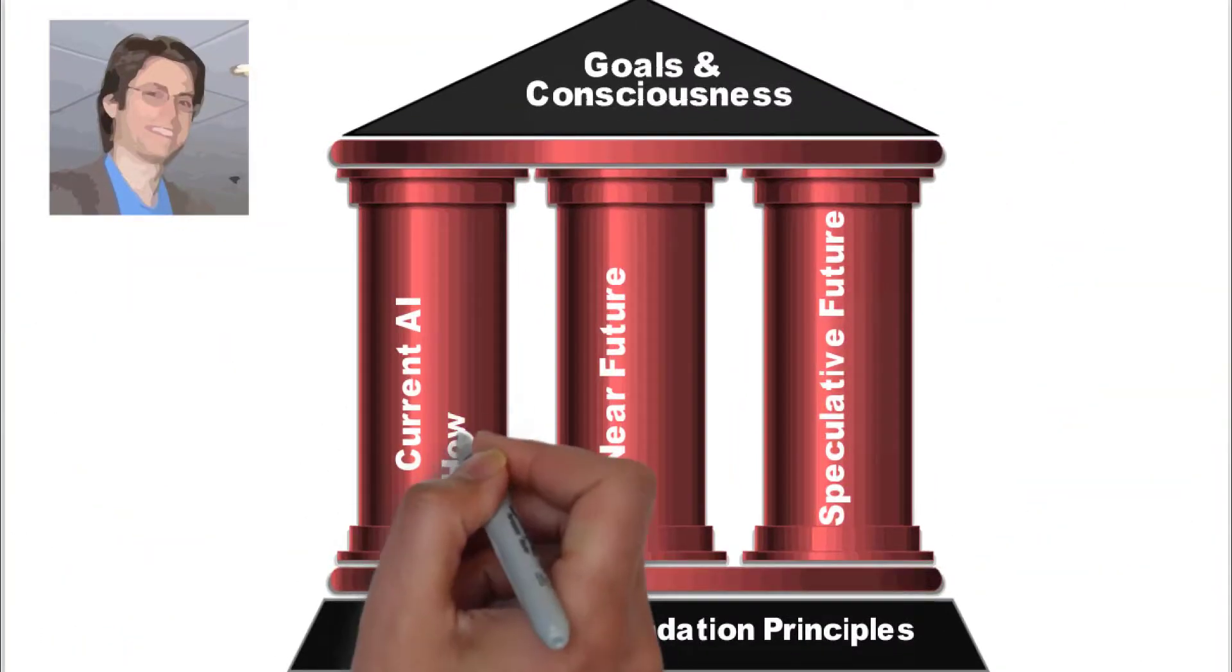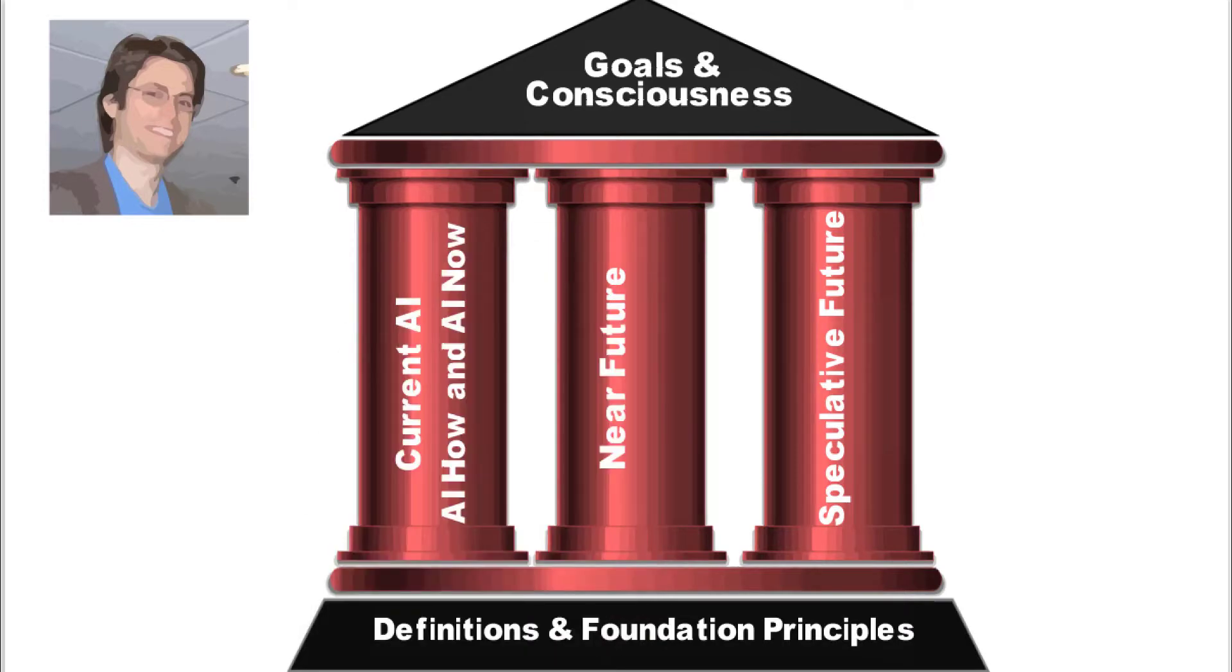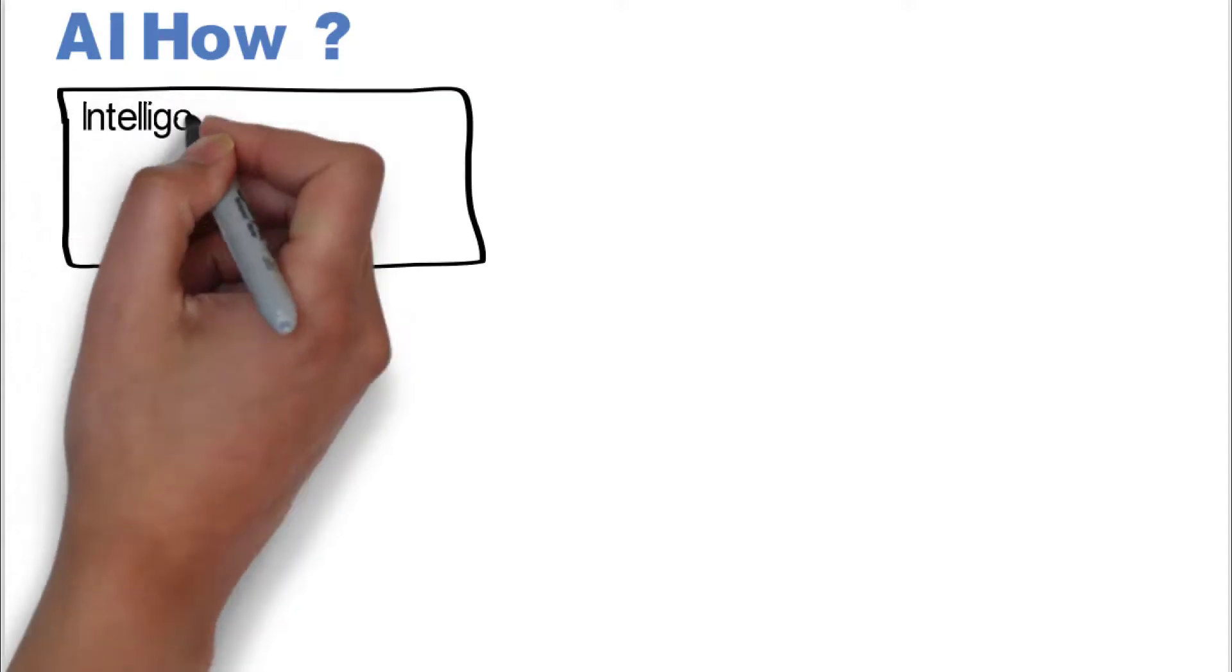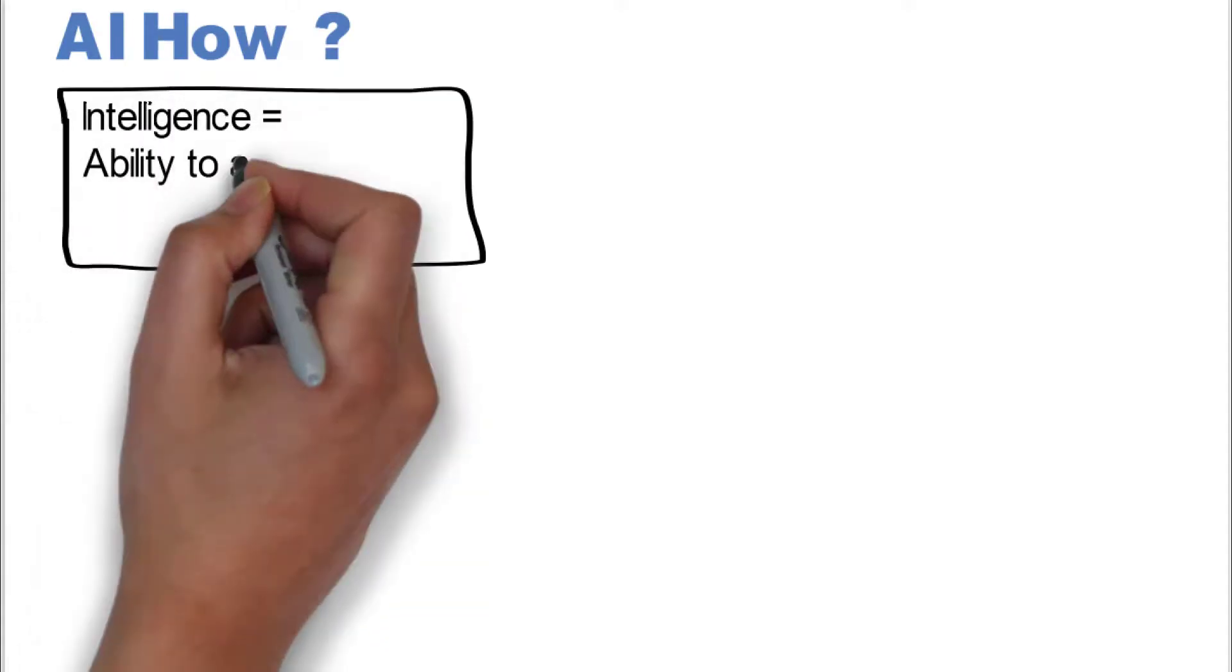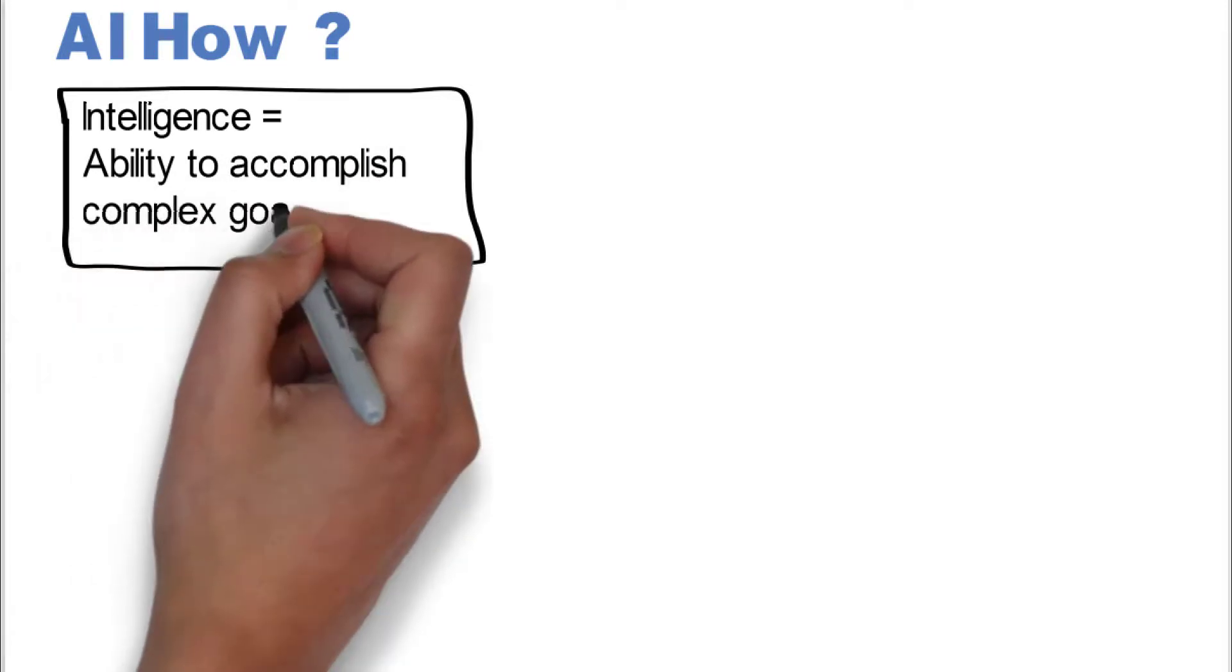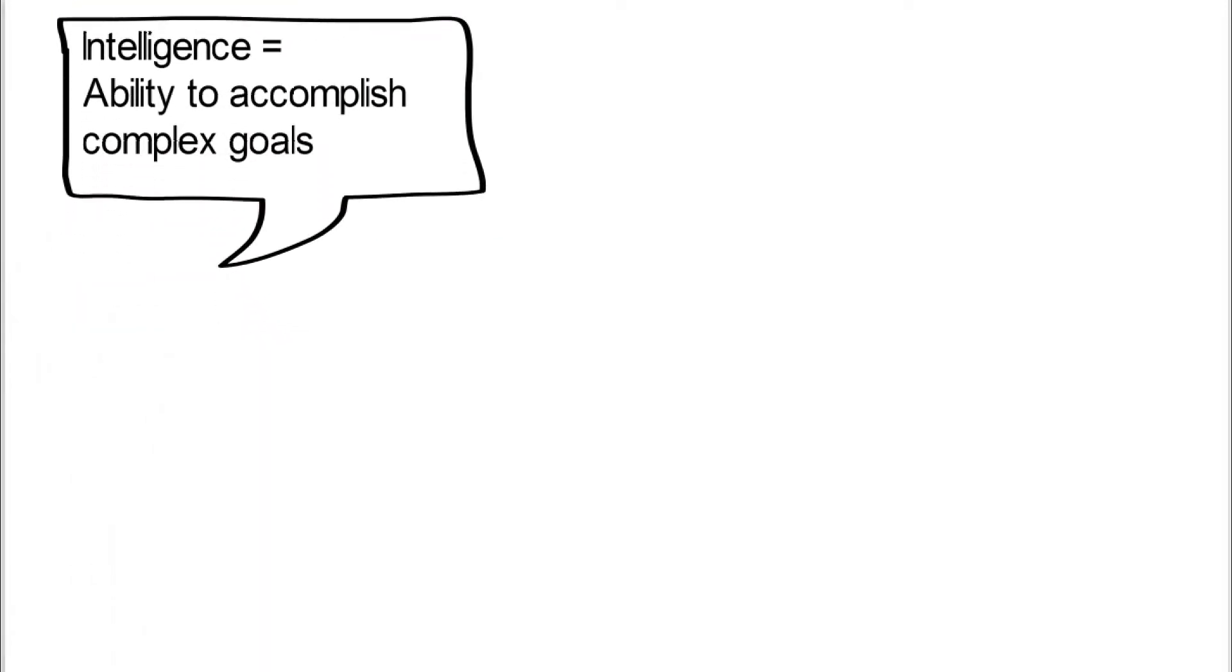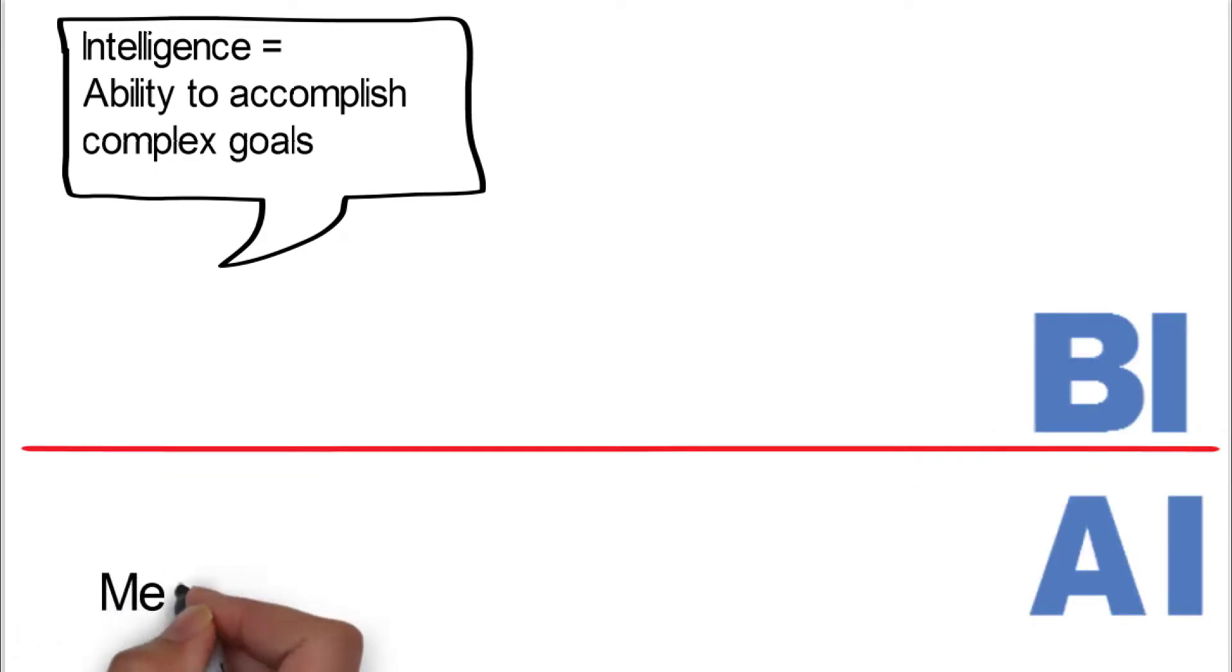He goes with definitions and principles, then he gets into AI how and AI now. When he gets into AI how, it's how is AI possible, how is artificial intelligence possible. He starts with a definition of intelligence: ability to accomplish complex goals. Then he puts a dividing line to talk about what is biological intelligence and what is artificial intelligence.